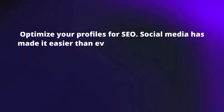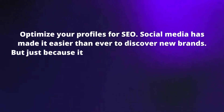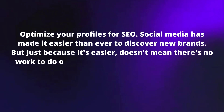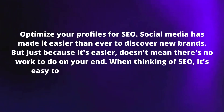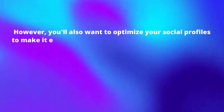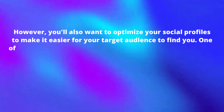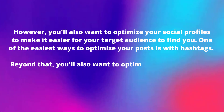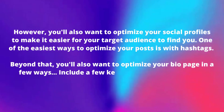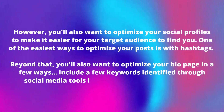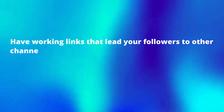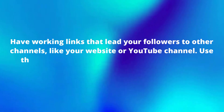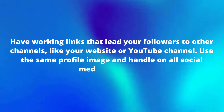Social media has made it easier than ever to discover new brands, but there's still work to do on your end. When thinking of SEO, it's easy to assume it's only website optimization. However, you'll also want to optimize your social profiles to make it easier for your target audience to find you. One of the easiest ways is with hashtags. Beyond that, optimize your bio page by including keywords in your company description, having working links that lead followers to other channels like your website or YouTube channel, and using the same profile image and handle across all social media platforms.